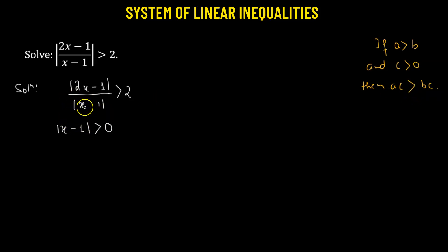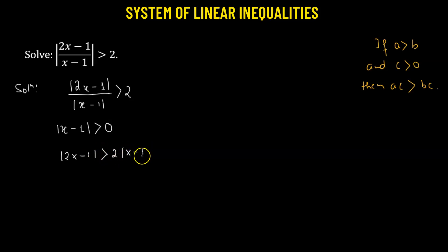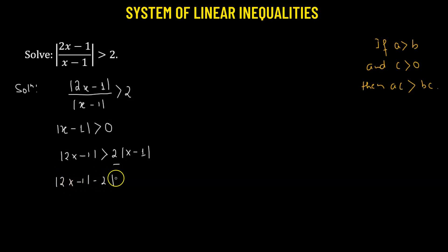So we'll multiply both sides by absolute value of (x minus 1), giving us: absolute value of (2x minus 1) is greater than 2 times absolute value of (x minus 1). Transposing the right-hand side term gives absolute value of (2x minus 1) minus 2 times absolute value of (x minus 1) greater than 0. Let's label this as inequality number 1.